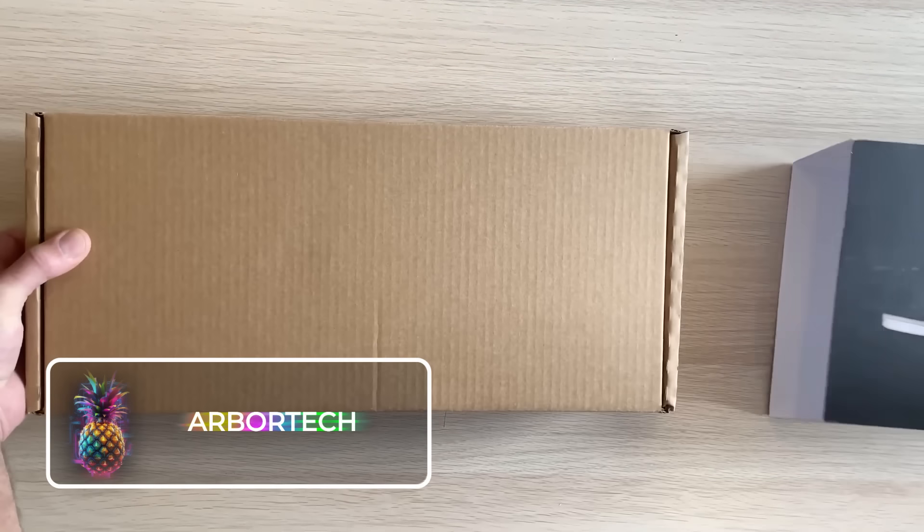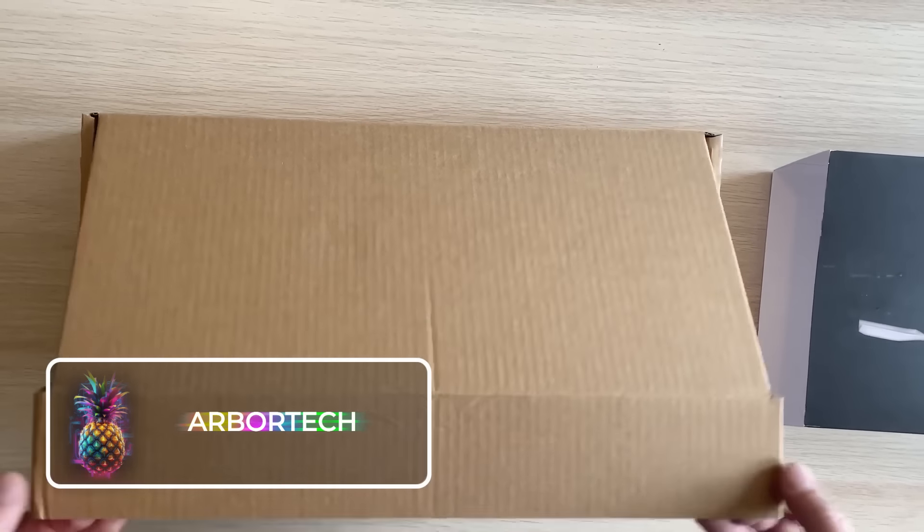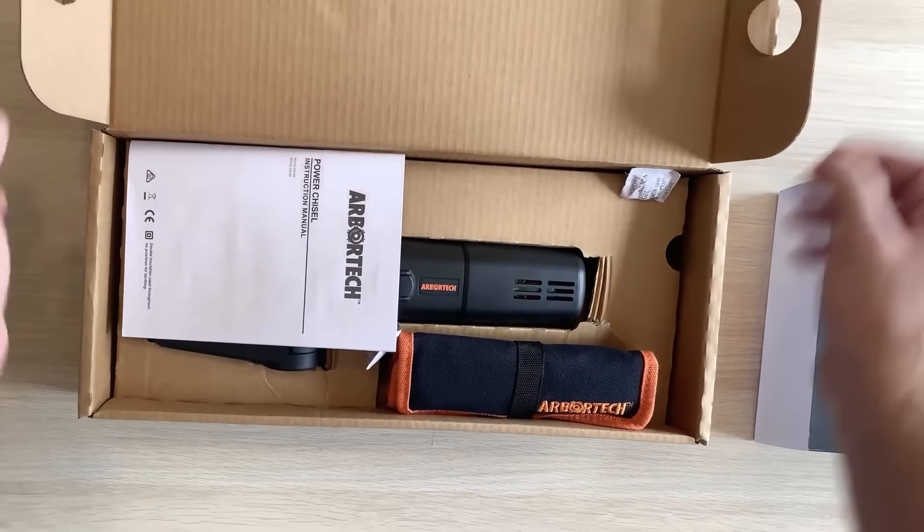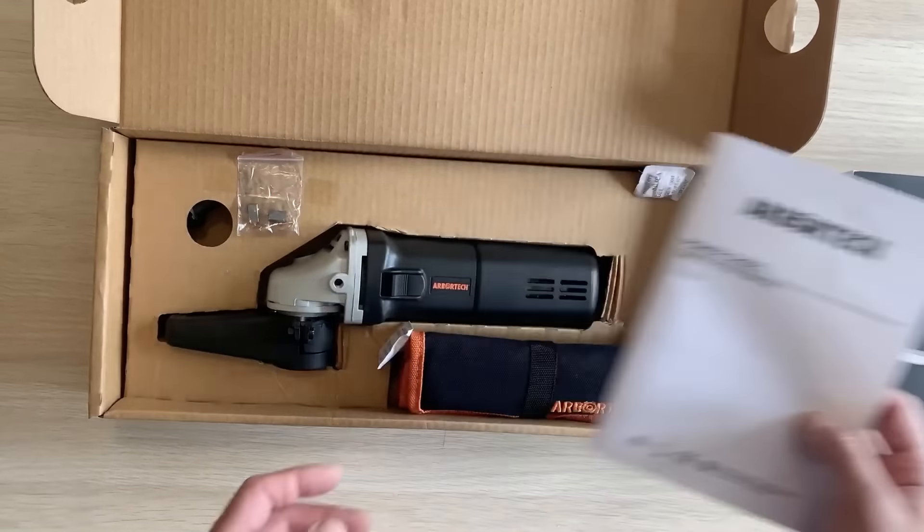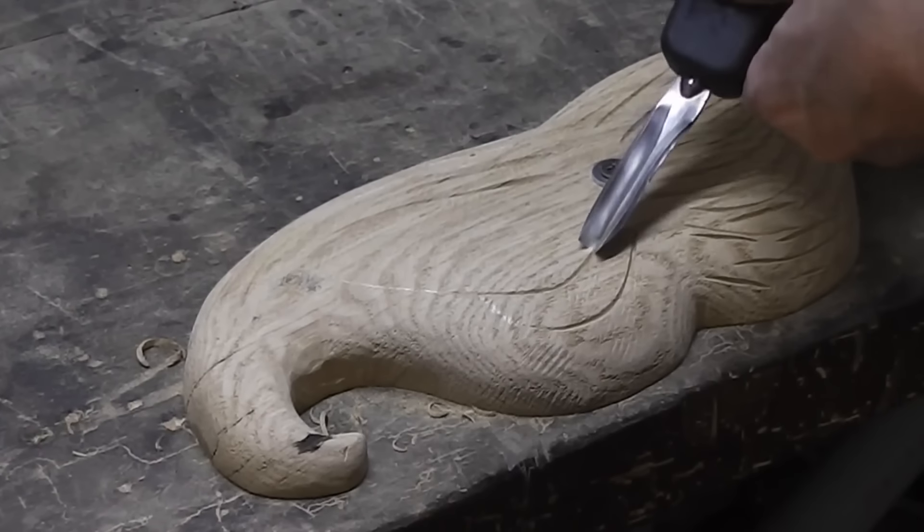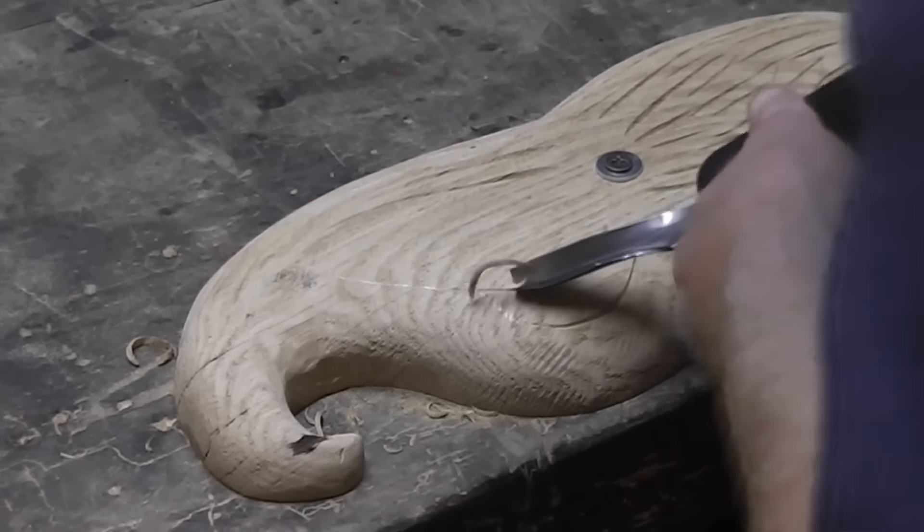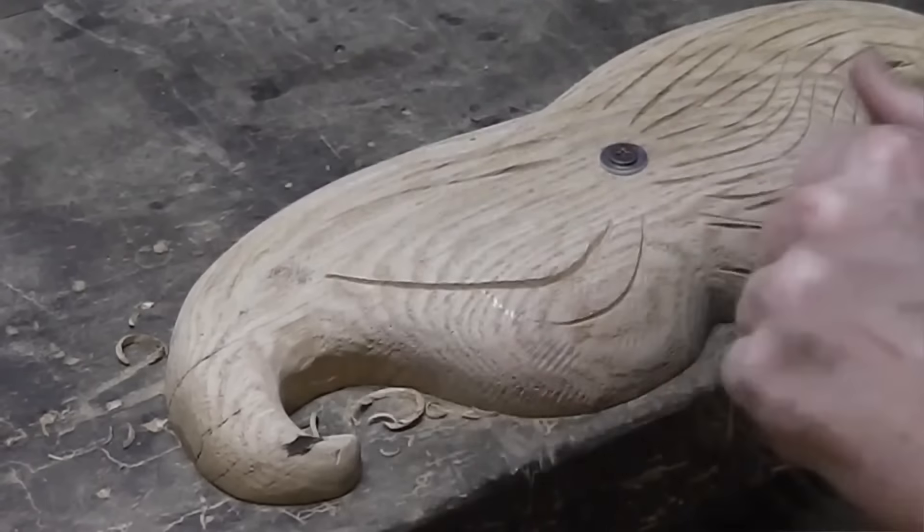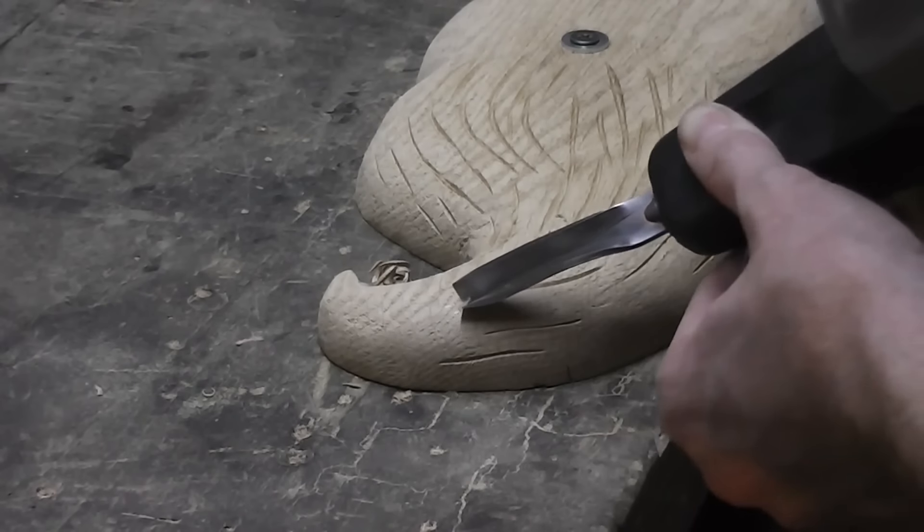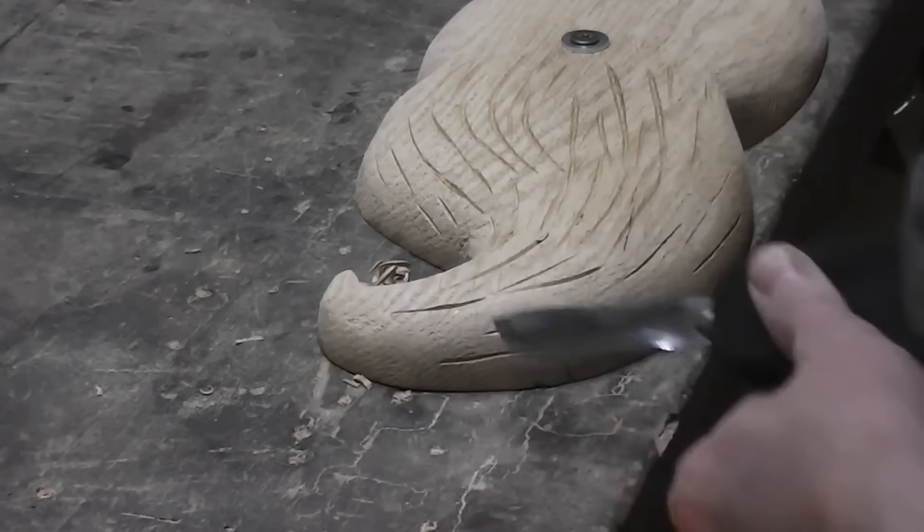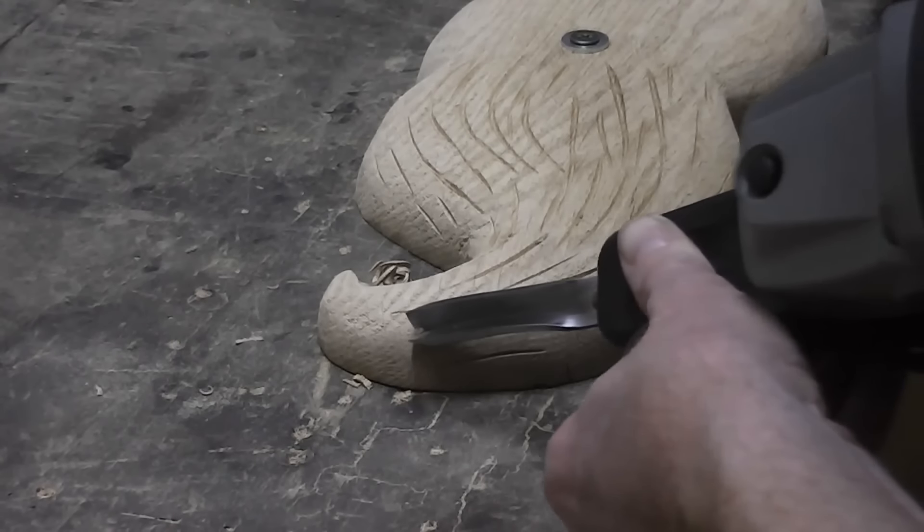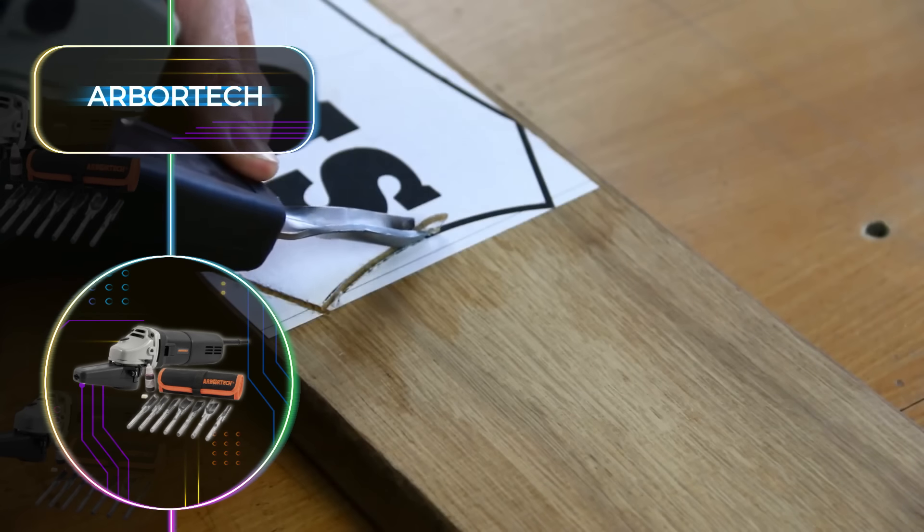Arbor Tech. Craftsmen have never been more spoiled for choice when it comes to power tools, all thanks to Arbor Tech. This Australian company offers a wide range of high-quality power tools and accessories that are perfect for any woodworker, whether they are professional or just starting out. Powered by a special 960-watt motor, this chisel reaches speeds of up to 11,000 RPM while maintaining low vibration and noise levels.